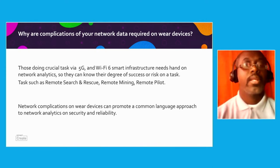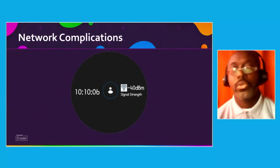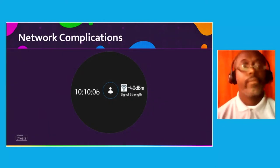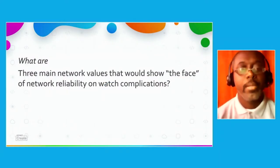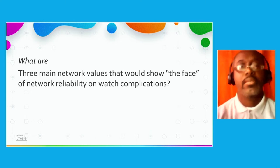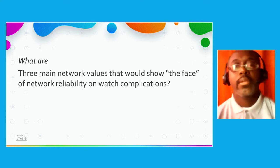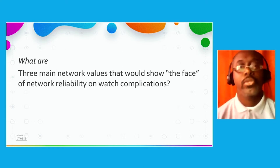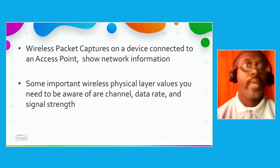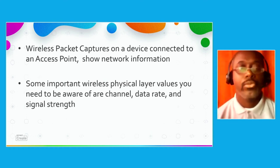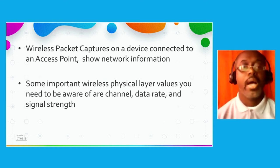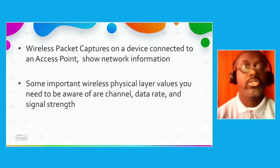What are the three main network values that will show the face of network reliability on watch complications? Wireless packet captures on a device connected to an access point show network information. Some important wireless physical layer values you need to be aware of are channel, data rate, and signal strength.